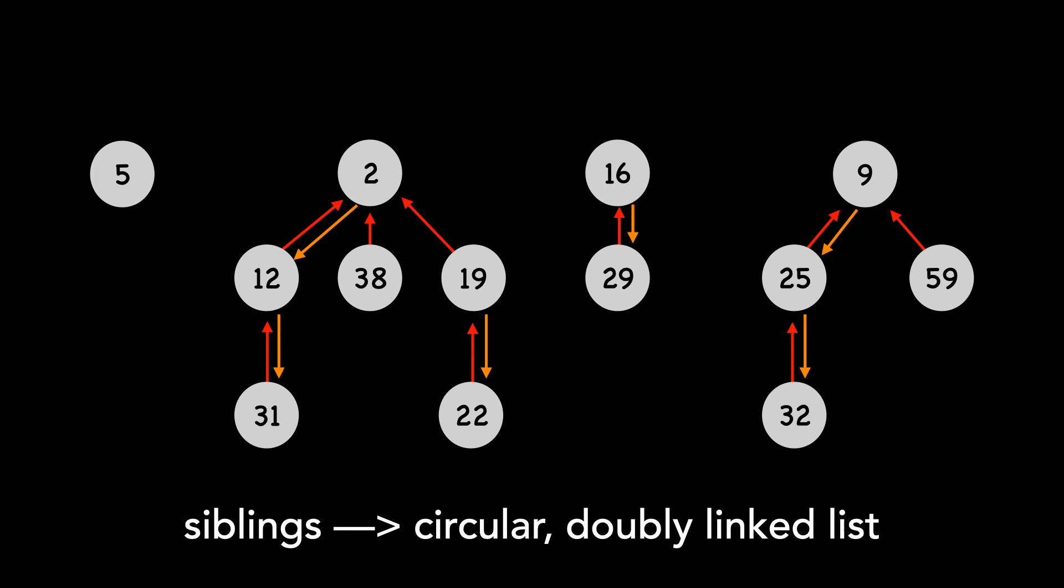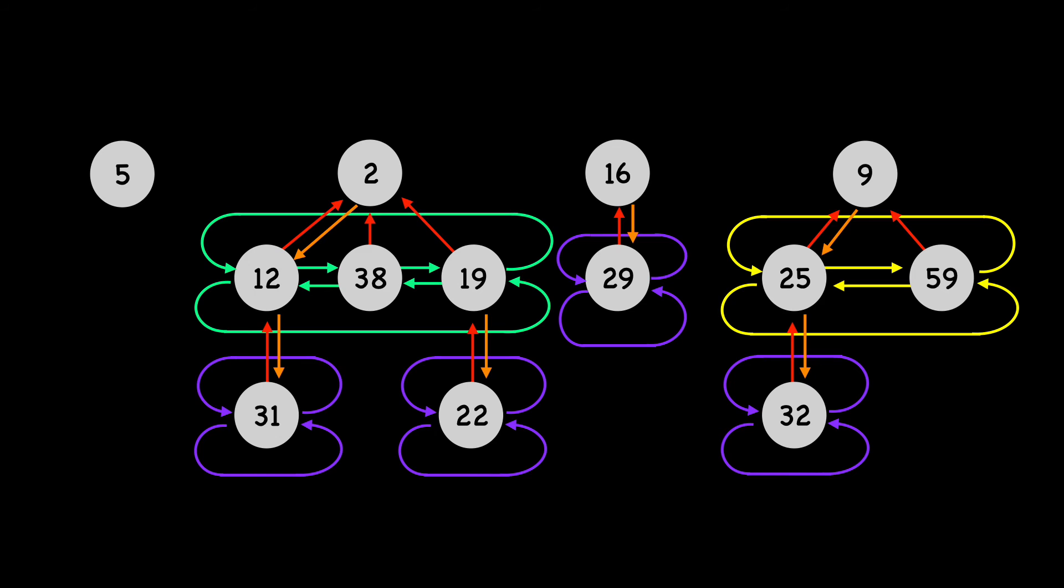Siblings are linked together by a circular doubly linked list. If a node is an only child, the left and right pointers point to itself. Because we use circular doubly linked lists, we can add nodes to a list and concatenate two lists in constant time.